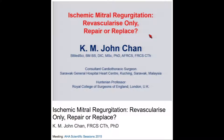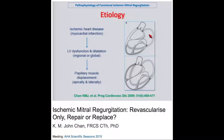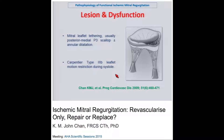I've been asked to speak on ischemic mitral regurgitation — revascularized only, repair or replace. Ischemic mitral regurgitation, as we all know, is a disease of the left ventricle. It occurs following myocardial infarction, typically involving the posterior or inferior wall, causing LV dysfunction and dilatation, and papillary muscle displacement apically and laterally. It can also occur in a more global setting with an anterior myocardial infarct. The resulting lesion is a Carpentier type 3B leaflet motion restriction during systole.